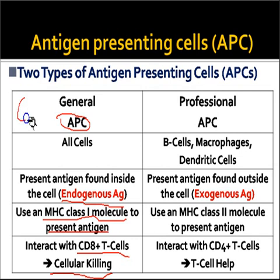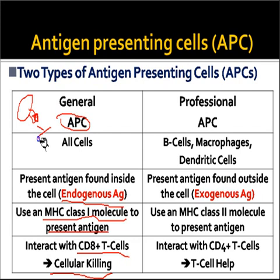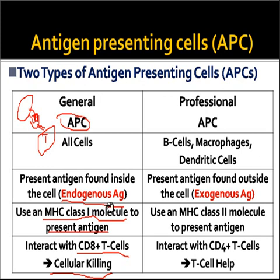The general APCs together with the MHC class 1 complex molecules and the antigens form a complex that is presented to the T cell, which recognizes and binds to it to produce its further response. So where an endogenous antigen is present, MHC class 1 bound to the APC together with the antigen is presented to CD8+ T cells to promote cellular killing.